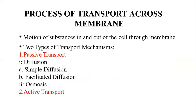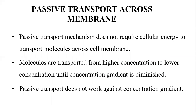The motion of substances in and out of the cell occurs through the membrane. Passive transport does not require cellular energy to transport molecules across cell membranes. Molecules are transported from higher concentration to lower concentration due to the concentration gradient, and these movements become slower and slower until they stop when the gradient is diminished.